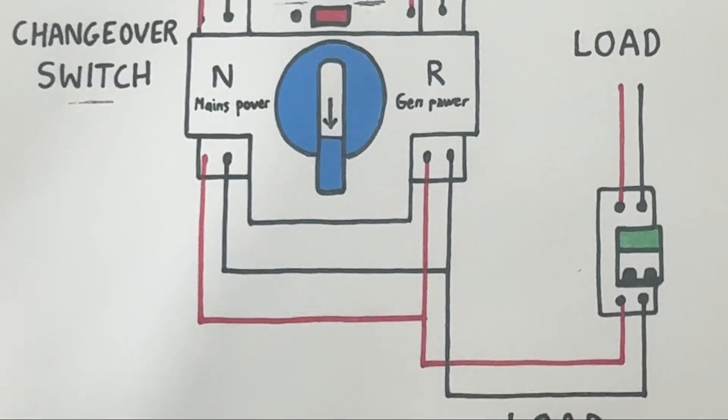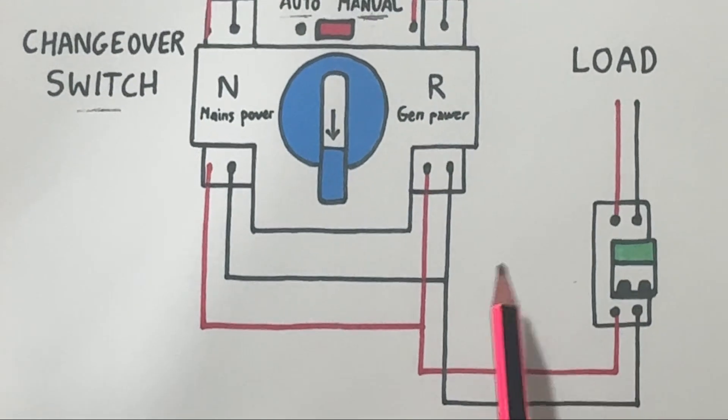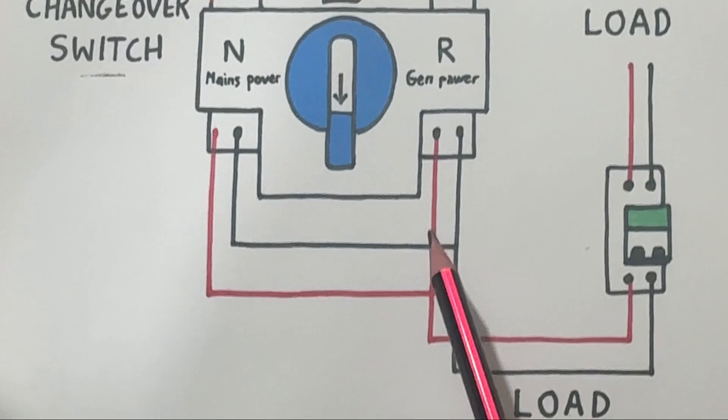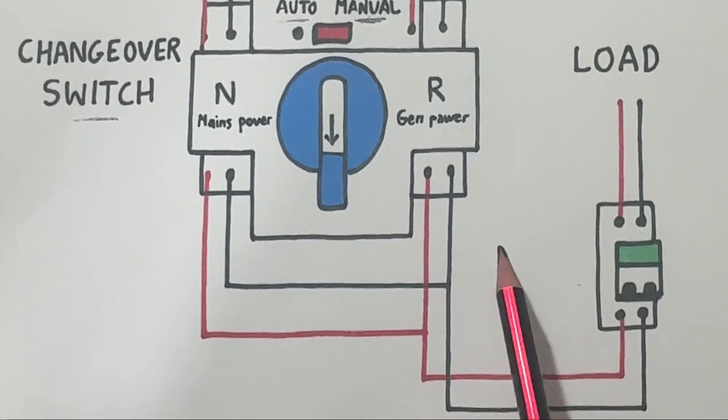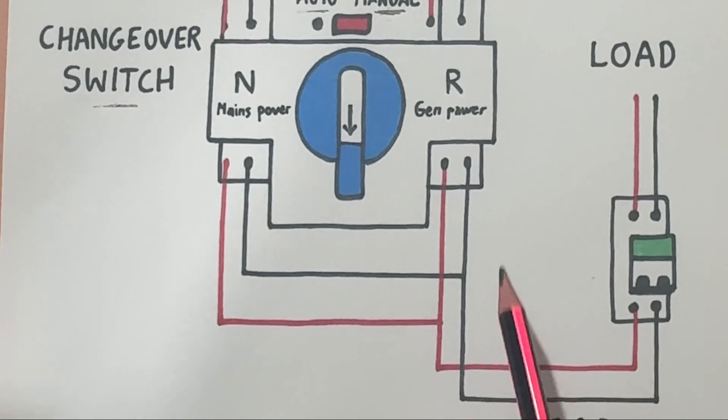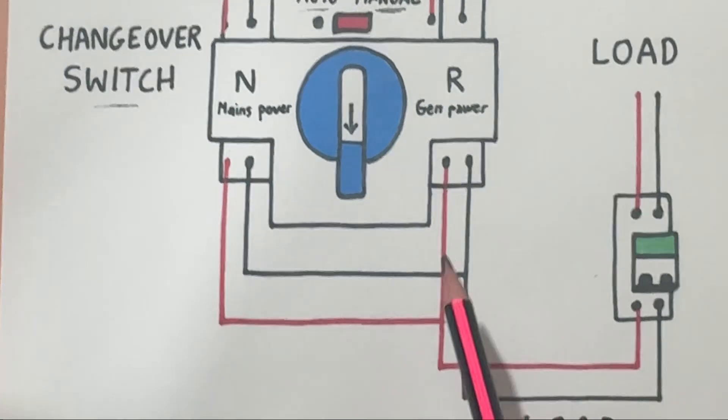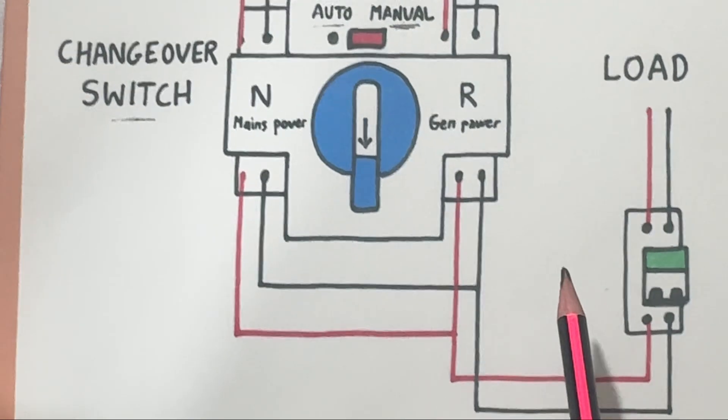Load connection. At the bottom you see the load which represents all your electrical equipment: lights, fans, appliances, or industrial machines. The load receives power either from the main grid or the generator, depending on which source the changeover switch connects to.